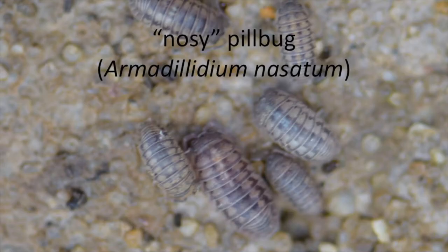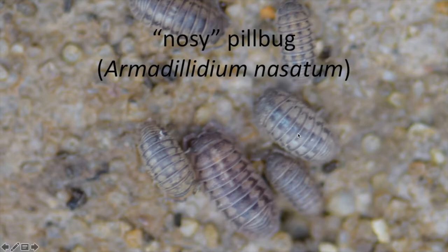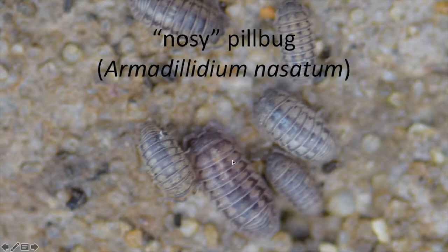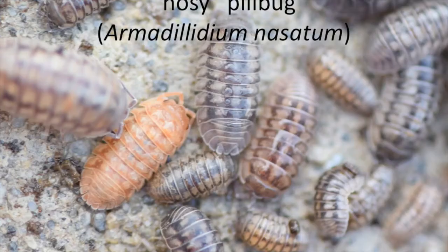Here we have Armadillidium nasatum. Like the vulgare, they will roll up into a ball. However, they have a sandpapery, gritty exoskeleton — not nearly as shiny. They also have a distinct pattern, almost like a feathered or fishbone pattern going down their bodies. That's how you distinguish Armadillidium nasatum from Armadillidium vulgare — both roll into balls, but nasatum is less shiny and has that patterning.